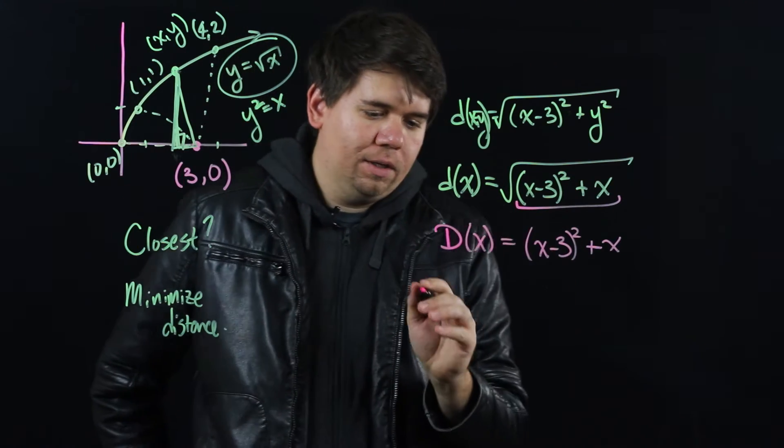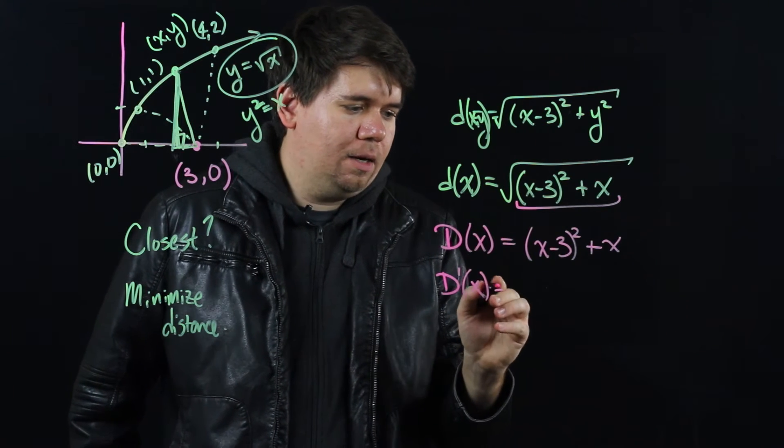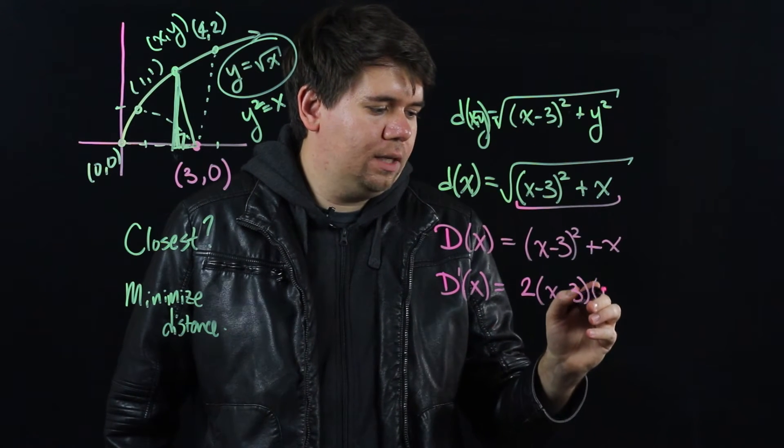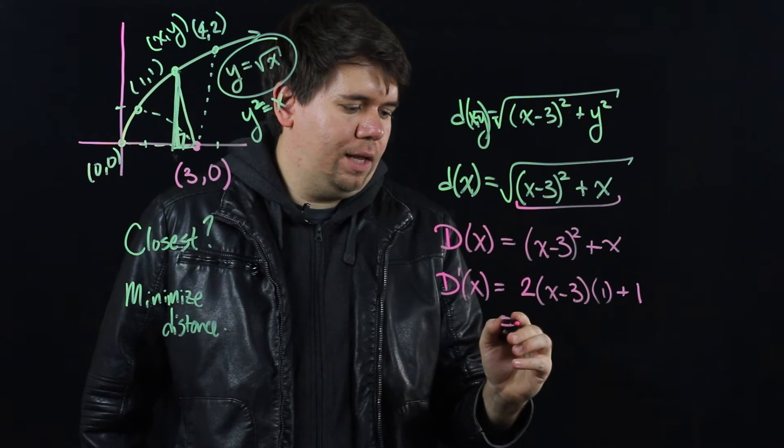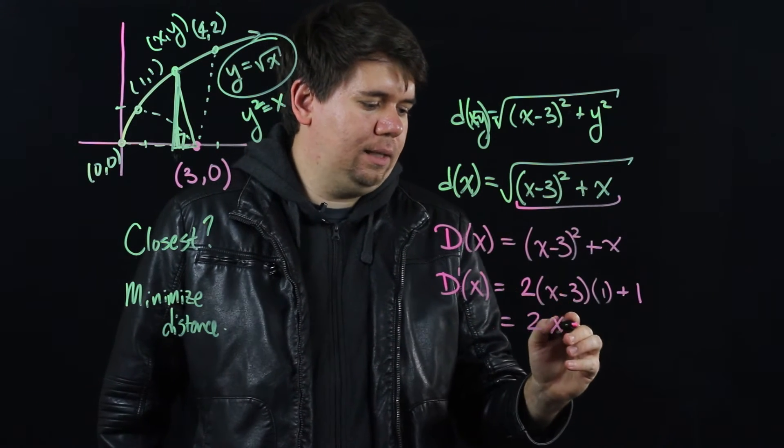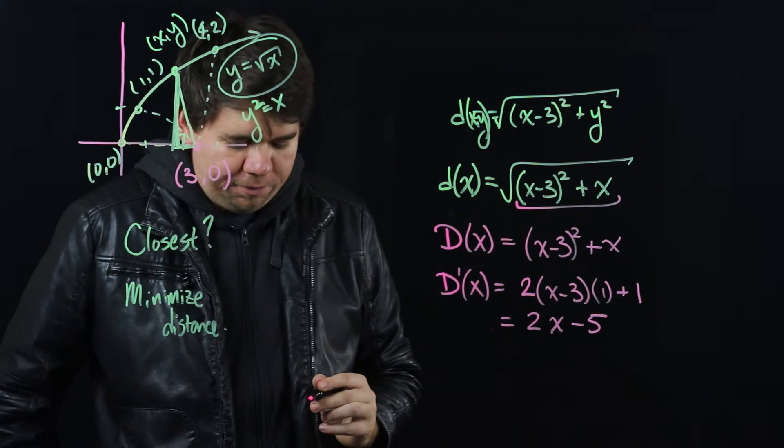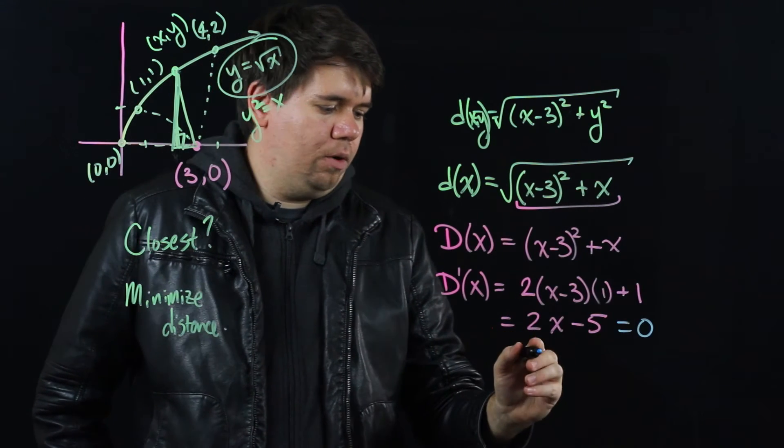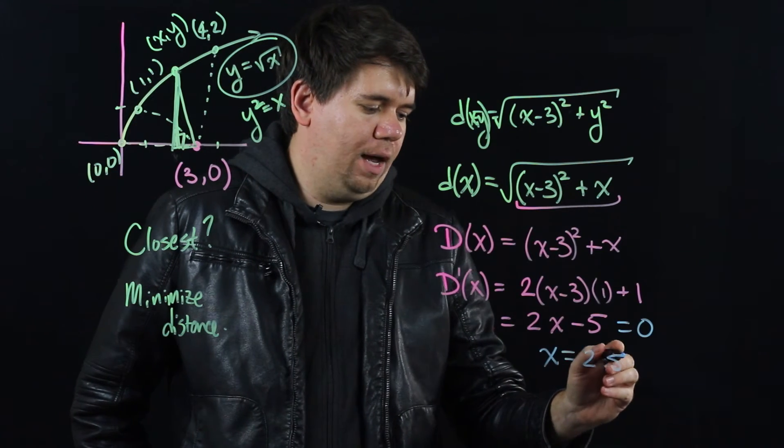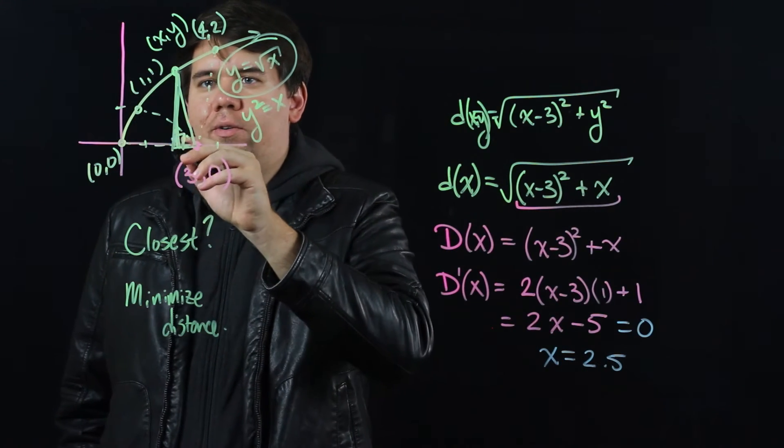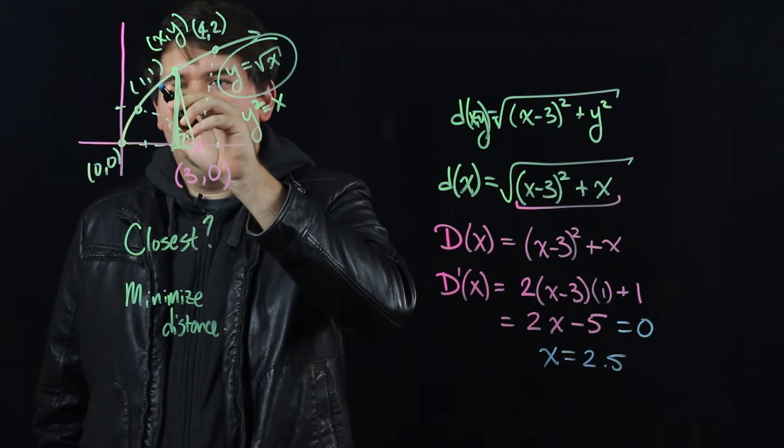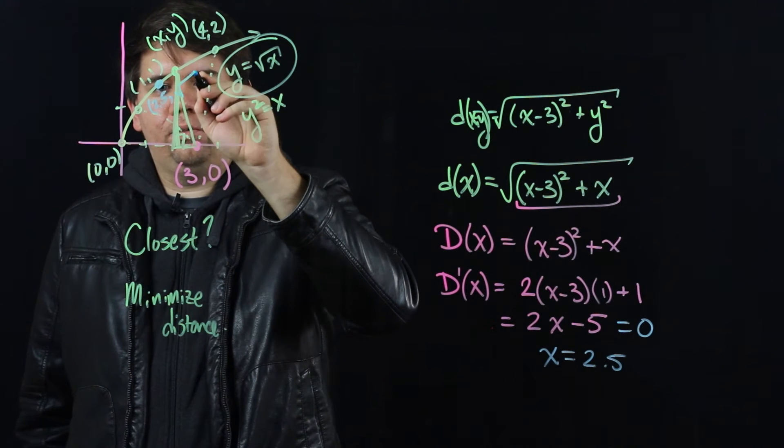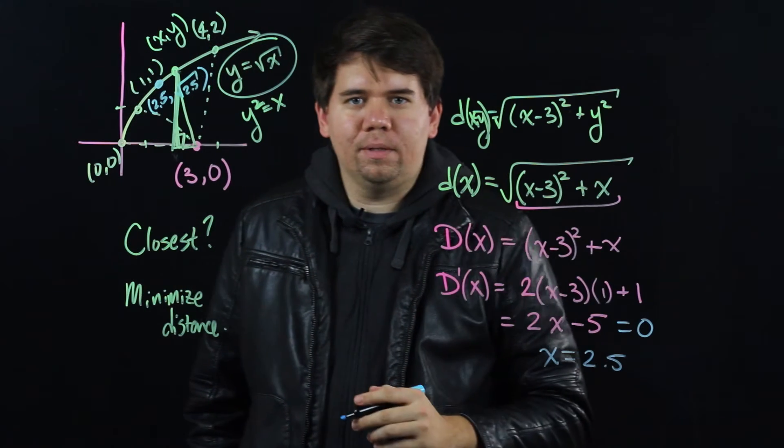The derivative of big D comes out to just be 2 times (x-3) and then by the chain rule times 1, plus 1, so that's just 2x - 6 + 1, so 2x - 5. To find the critical values we'll set that equal to 0 and we see that it's 0 when x is at 2.5. So here I'm at this special value 2.5, which should be somewhere around here. x is 2.5, y is just the square root of 2.5, whatever that happens to be.